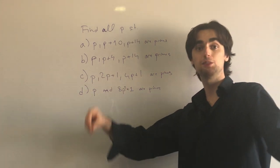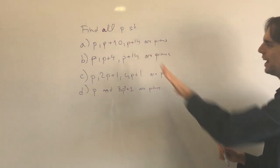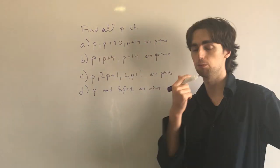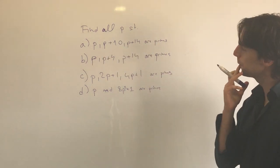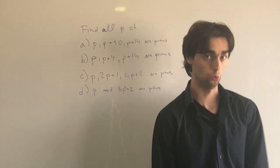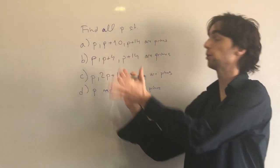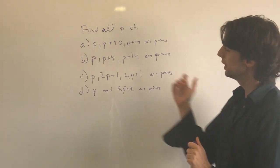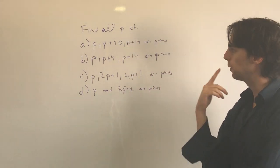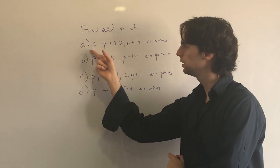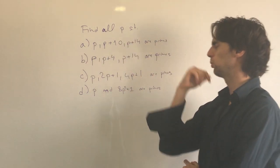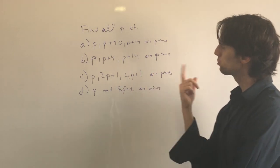Let's begin with part A. We have P, P plus 10, and P plus 14 are all primes. Let's assume we're new and don't know this technique, so let's look at primes one by one. P equals 2 doesn't work because 2 is even, so P plus 10 and P plus 14 would also be even.